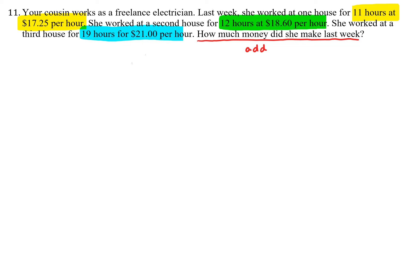Let's get the individual amounts for each of the three houses. We have to take the hourly rate and multiply it by the number of hours.